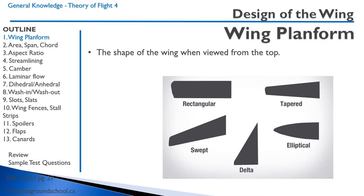The wing planform is the shape of the wing when we view it from the top. This is opposed to an airfoil, which is the view of the wing when we chop it and look at it from the side. For the planform, we can have rectangular wings, tapered wings, swept wings we see on a lot of jets, delta wings, and elliptical wings, which are actually very efficient wings. They're difficult to manufacture using metals, but you did see them in Second World War airplanes that were made out of wood.